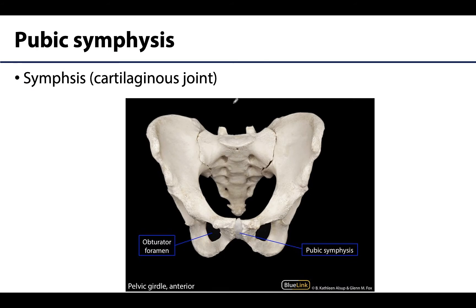The pubic symphysis is exactly what its name suggests — it is a symphysis, which is a cartilaginous joint. The two symphysis surfaces of the pubic bones articulate, and a cartilaginous portion attaches these two bones together. There is only one pubic symphysis, and it's right here in the midline, like most other symphyses. Little movement is allowed here as well.